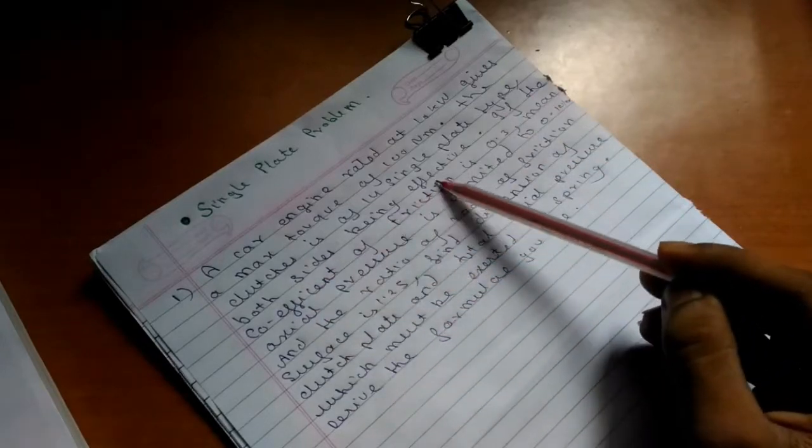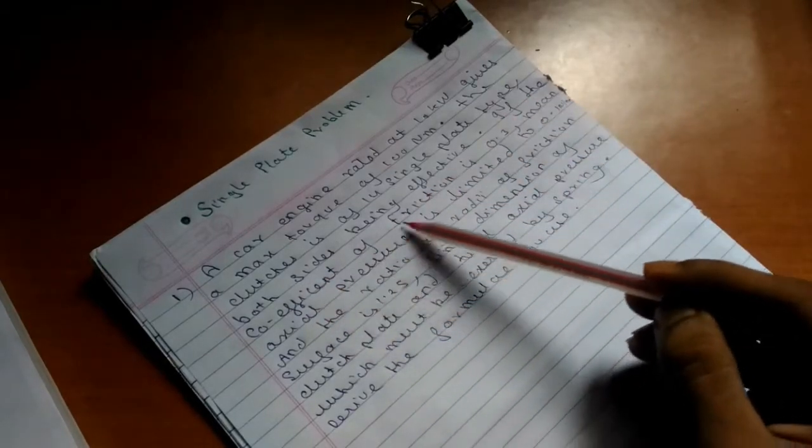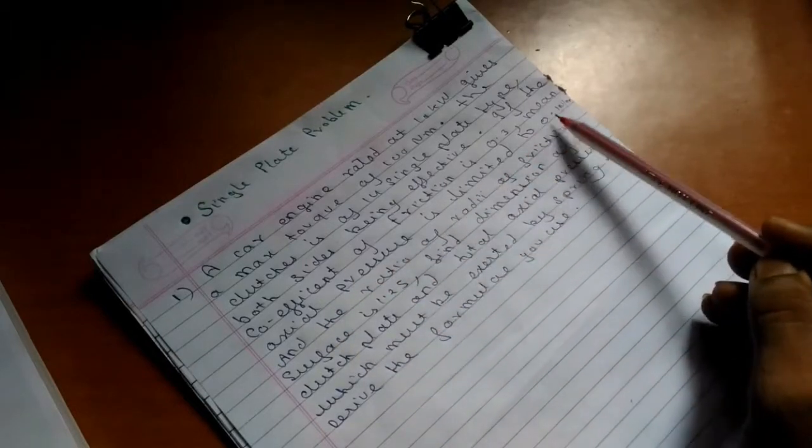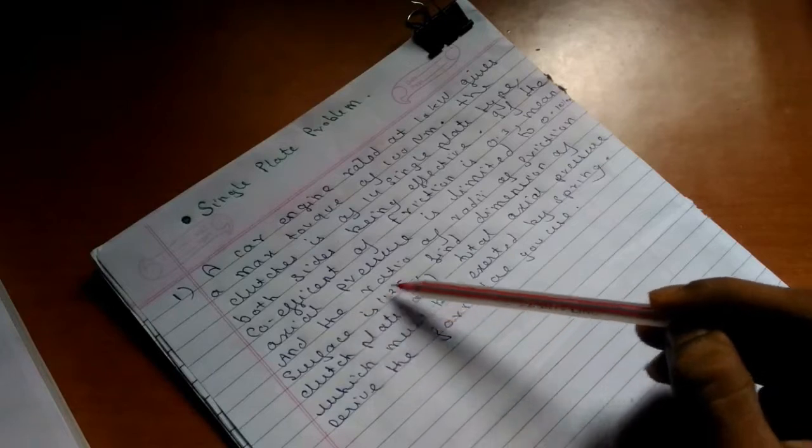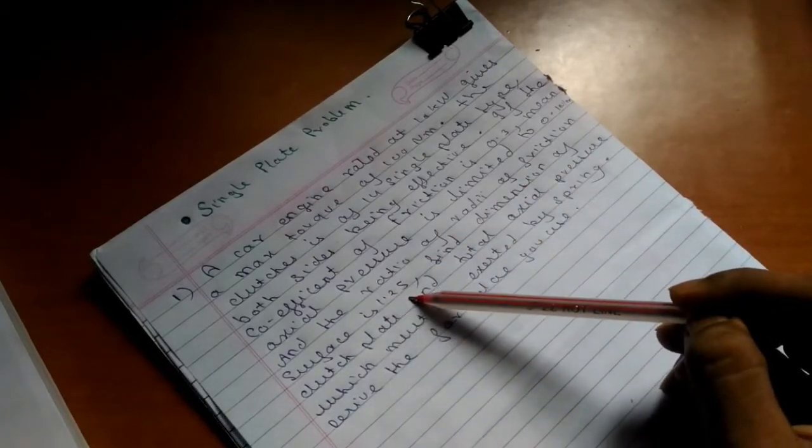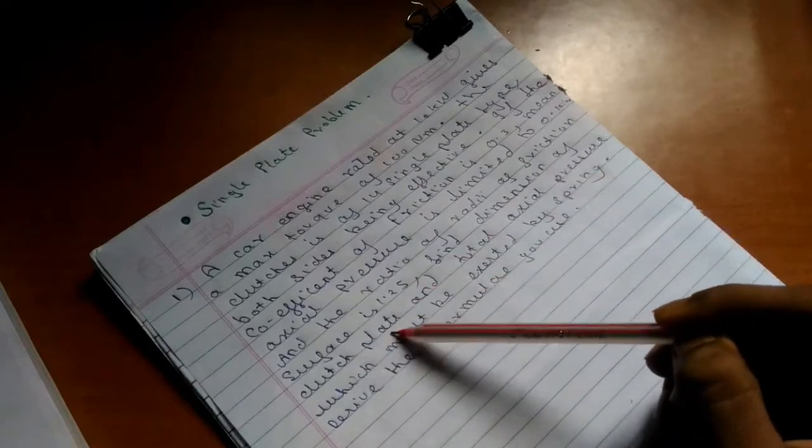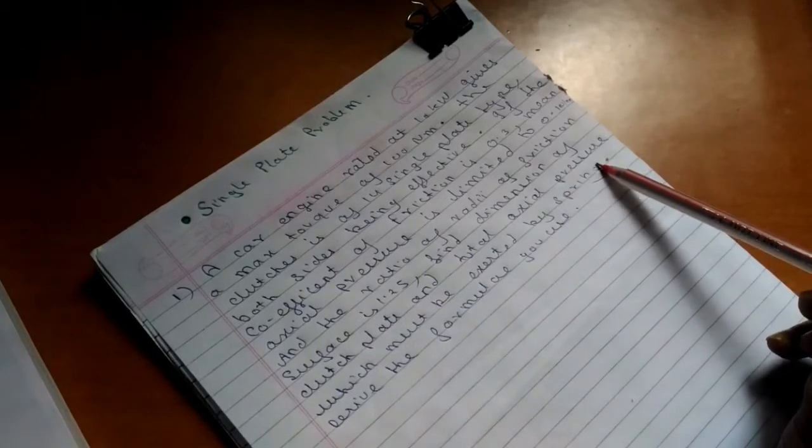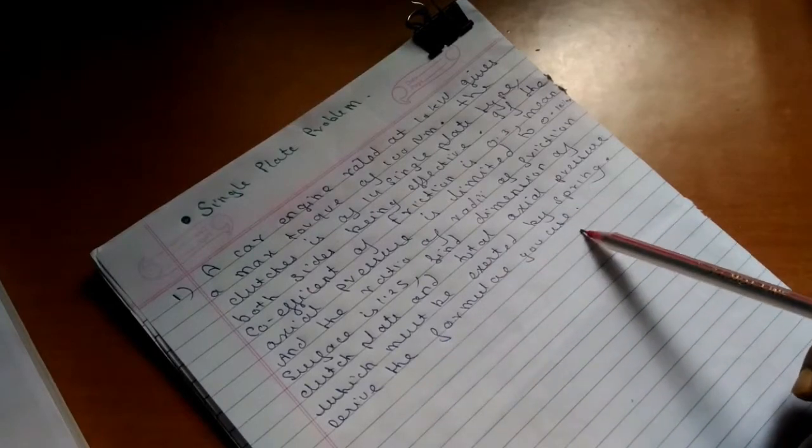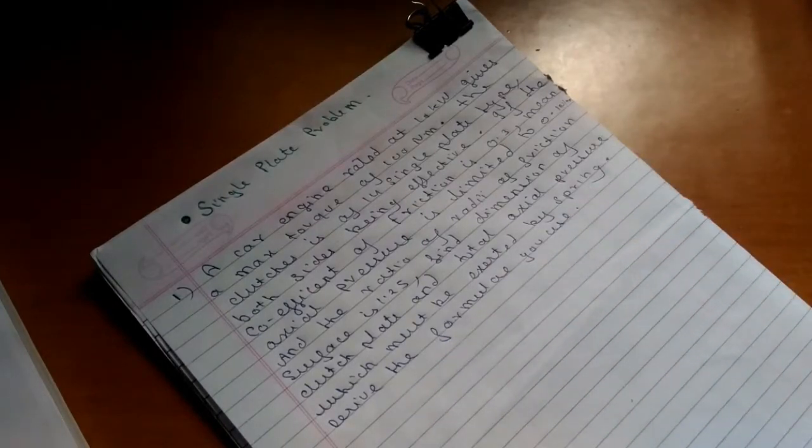The coefficient of friction is 0.3, mean axial pressure is limited to 0.1 Newton per meter square, and the ratio of radii of friction surface is 1.25. Find the dimension of the clutch plate and total axial pressure which must be exerted by the spring. Let us start with the solution by writing the given data.